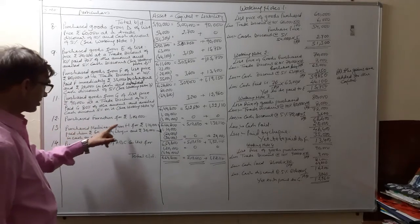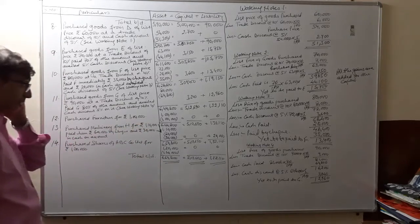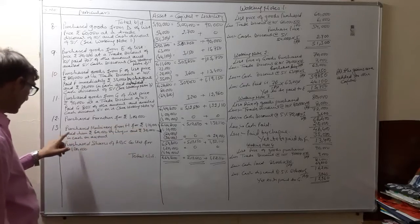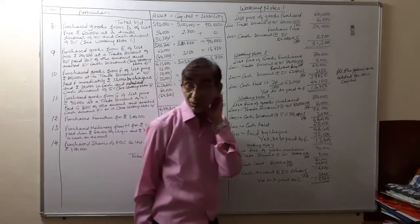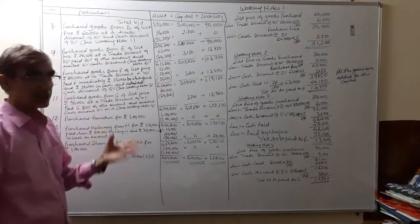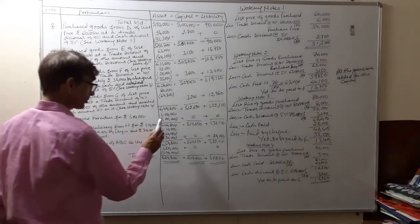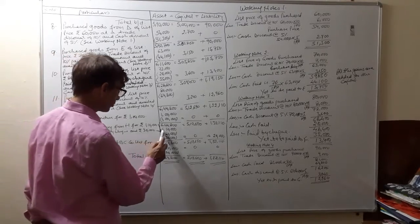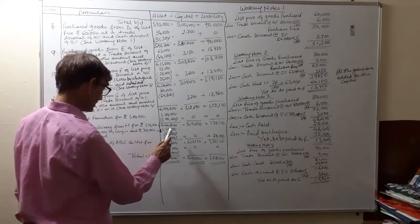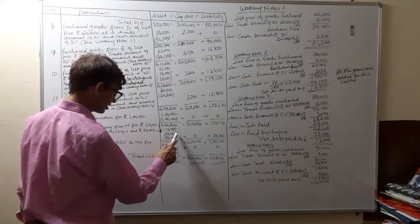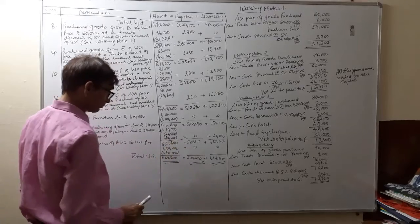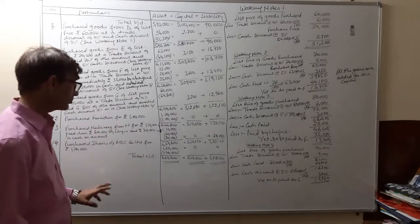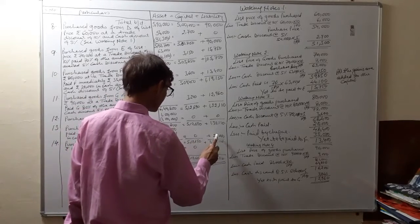Transaction 13: Purchase machinery from H for rupees 1 lakh 10,000. Paid H rupees 60,000 by check and rupees 30,000 in cash; the balance will be paid later on account. The machine is worth 1 lakh 10,000, so our asset increases by 1 lakh 10,000. Cash of 60,000 and check of 30,000 — both subtracted separately because cash and bank are two different assets. No effect on capital.